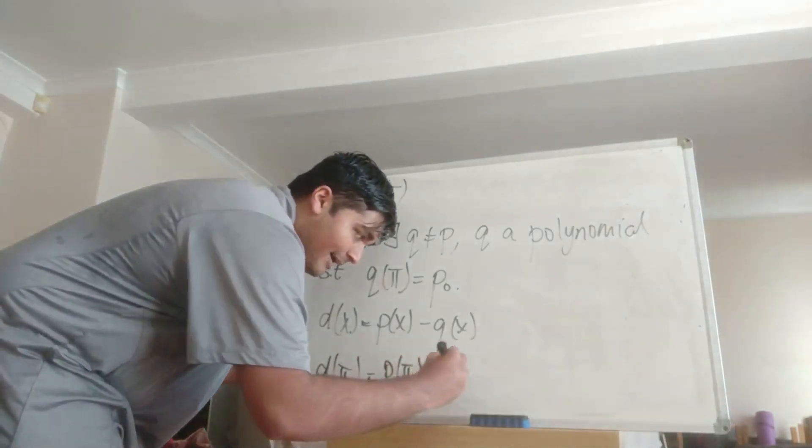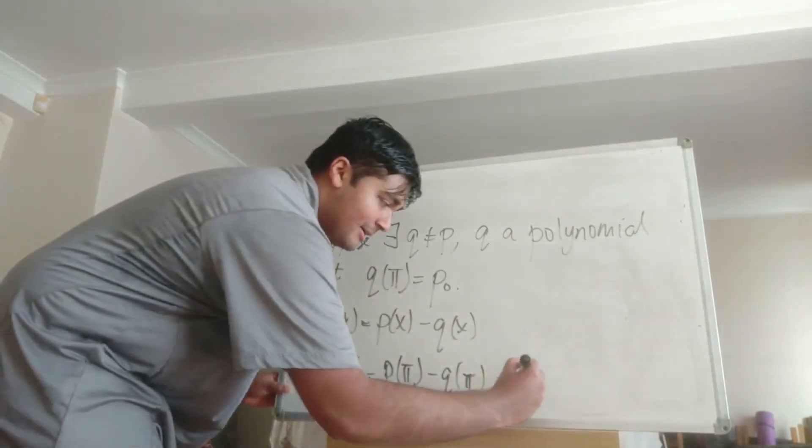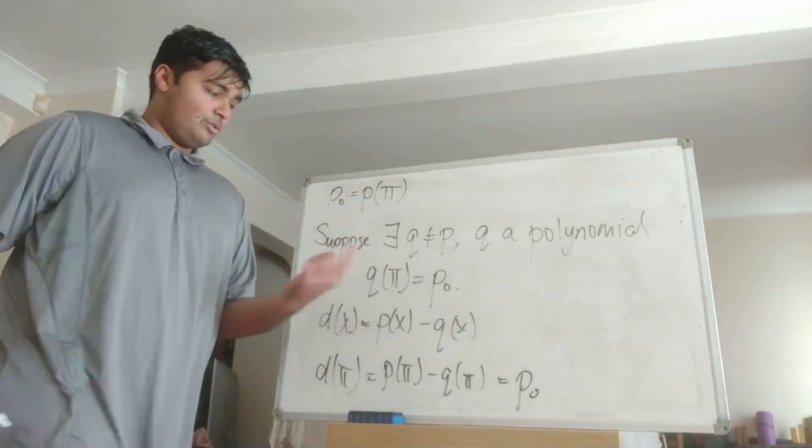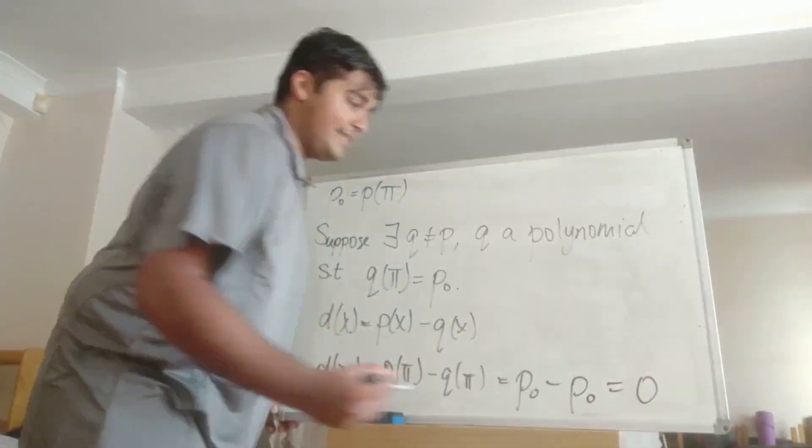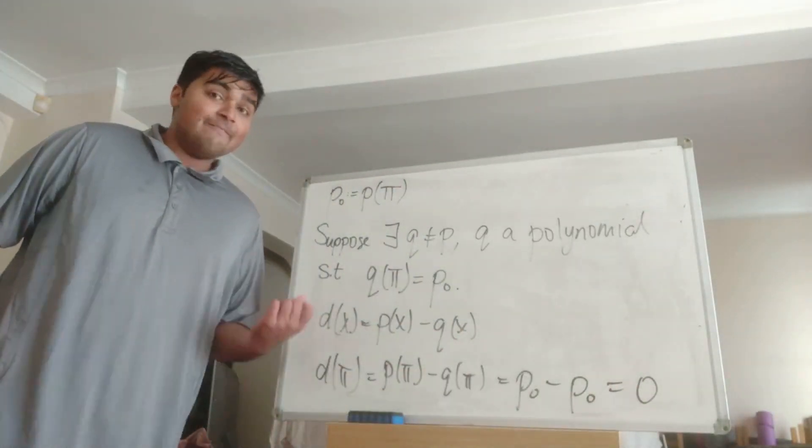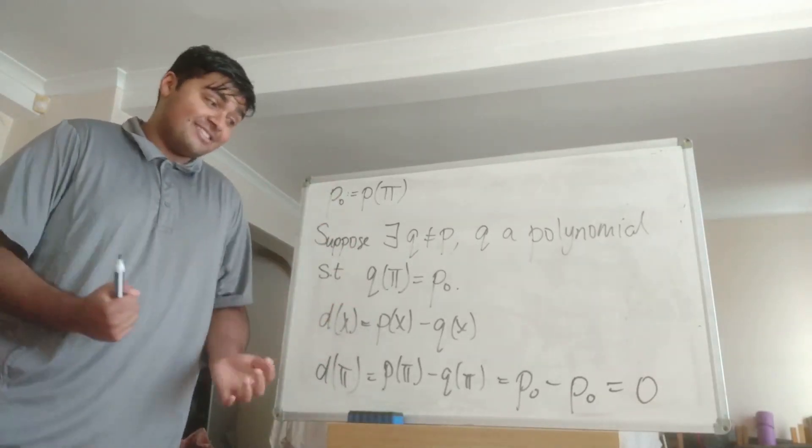So D(x) is a polynomial with rational coefficients but notice that D(pi) is equal to P(pi) - Q(pi). Now P(pi) is just P_0, that's how we define P_0, and we're supposing that Q(pi) equals P_0. So we get P_0 - P_0 and that of course is zero.